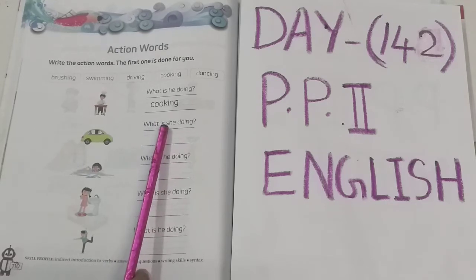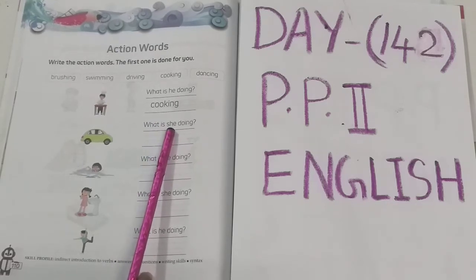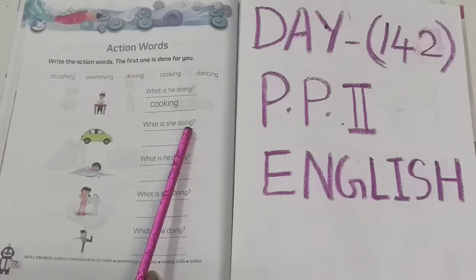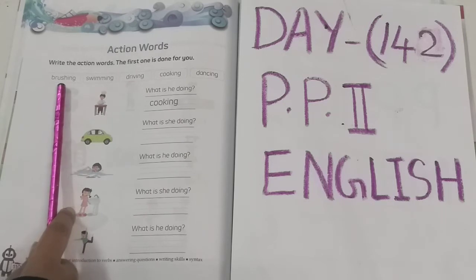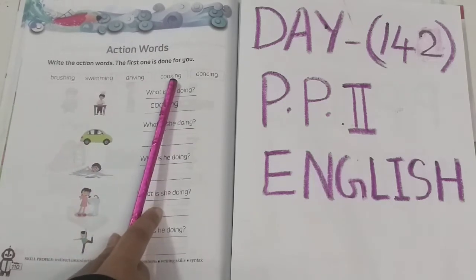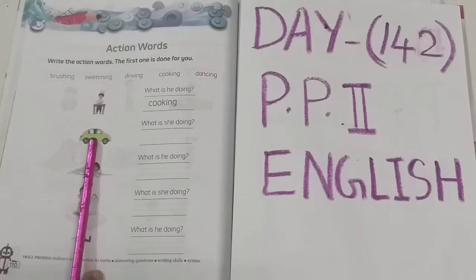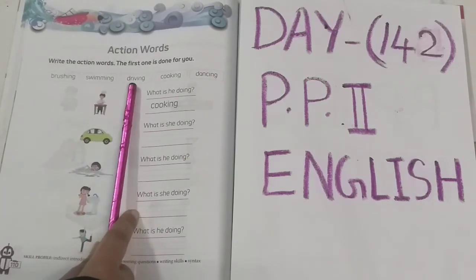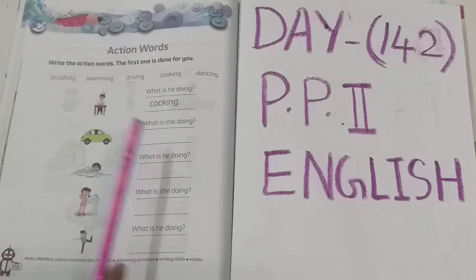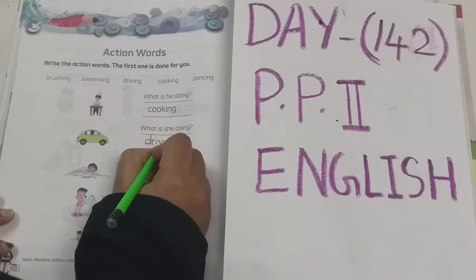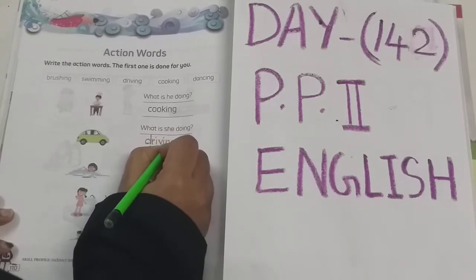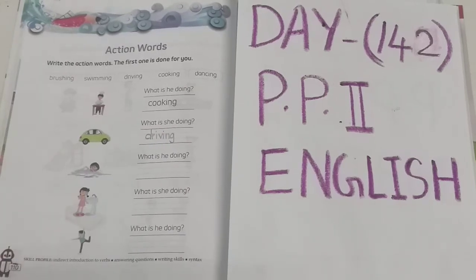What is she doing? Let's see — brushing, swimming, driving, cooking, dancing. What is there in the picture? Driving. The answer is driving. So children, you have to write driving here in this blank. D-R-I-V-I-N-G. Driving.